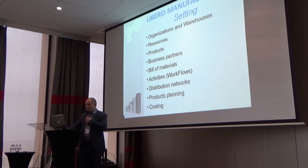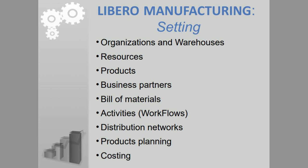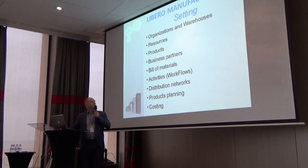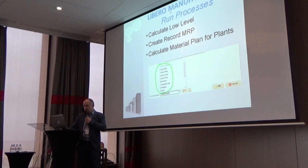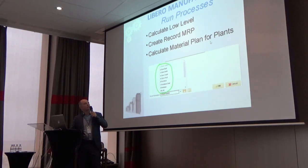The following settings are required for Liberal Manufacturing maintenance. You need a definition of organization, warehouse, resource, product, business partners, bill of material, possible workflows, distribution network, product planning, and add costing for bill of material or activity. After that, we can run some processes for calculation. The first is Calculate Low Level — this process calculates and registers the lowest level of product inside any bill of material. You must run this process when you add a new product or bill of material.